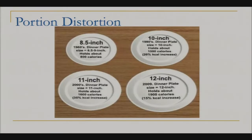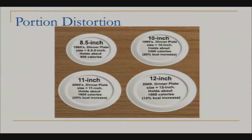Another thing we're up against is portion distortion. Take a typical dinner plate in the 1960s — it was eight and a half inches and held 800 calories. In my house, we'd consider that the salad plate or even the appetizer plate. A dinner plate now is about twelve inches and holds 1900 calories — more than double. But as our portions have increased, we haven't gotten more active, so we're not burning those extra calories off, and that's really what's leading to greater weight gain.